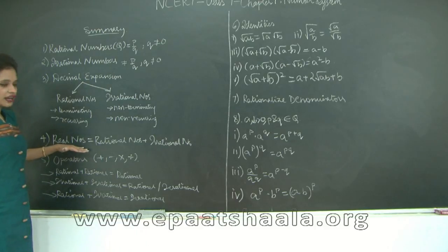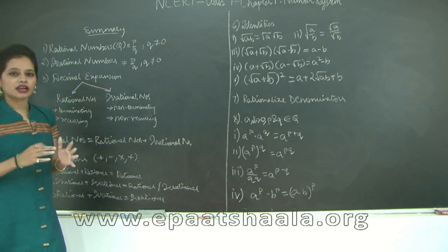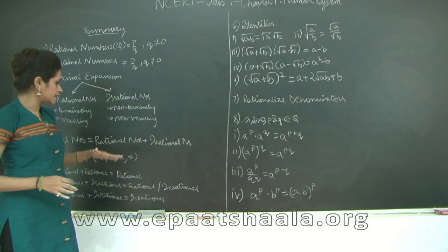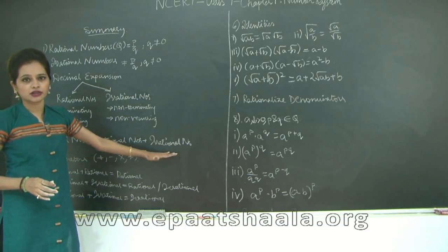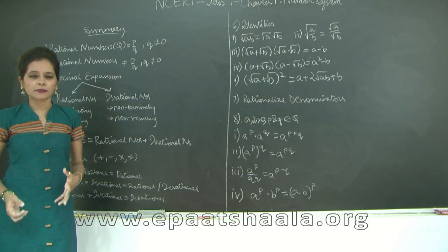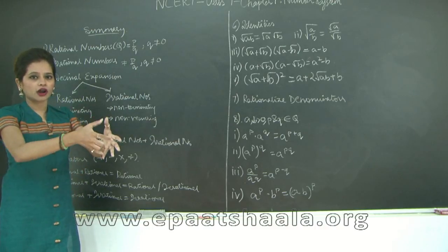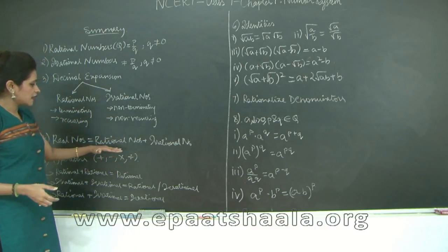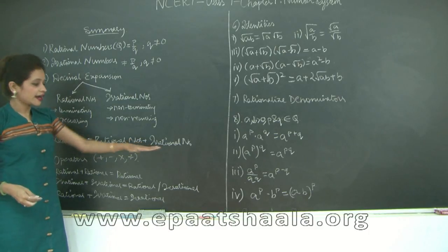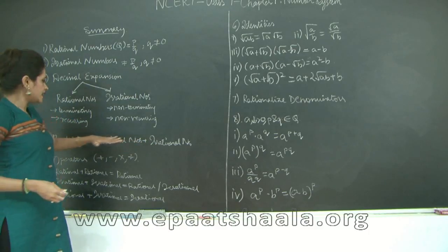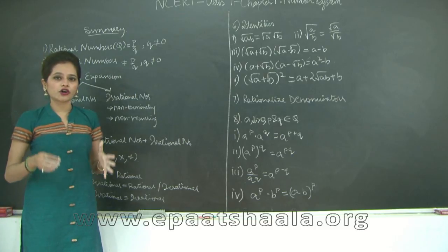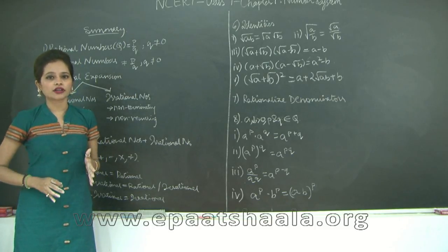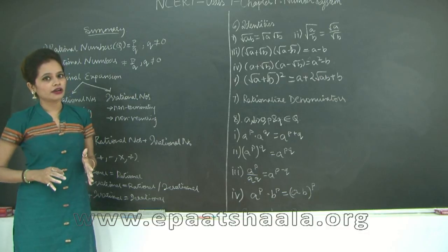Real numbers: what are they made up of? Real numbers can be broadly classified into two categories — rational numbers and irrational numbers. When you combine all rational and irrational numbers, the output is real numbers. Every real number can be plotted on a number line, and every number plotted on the number line is a real number.